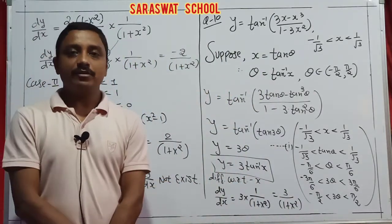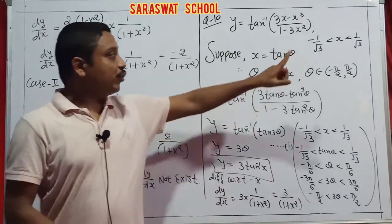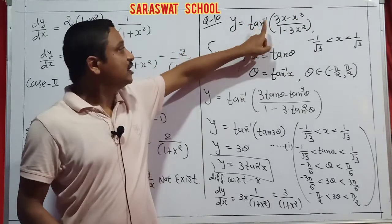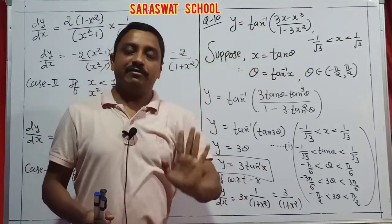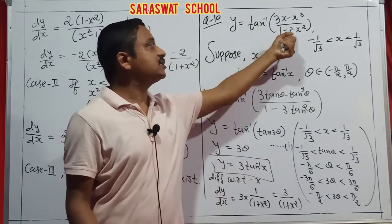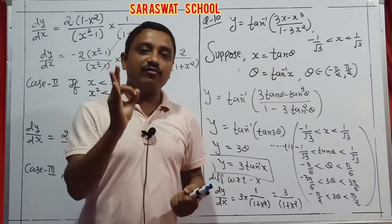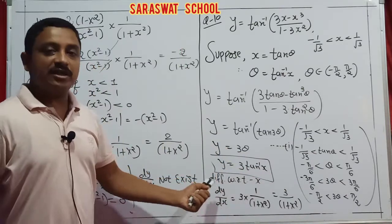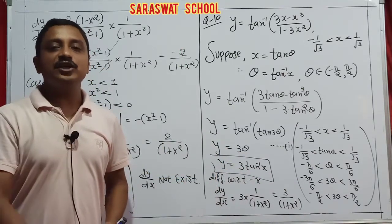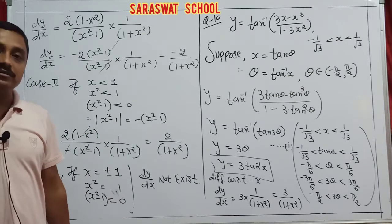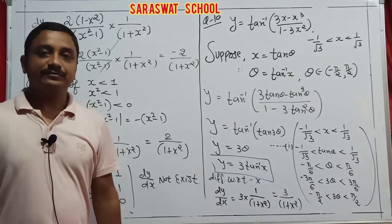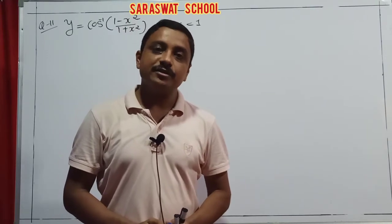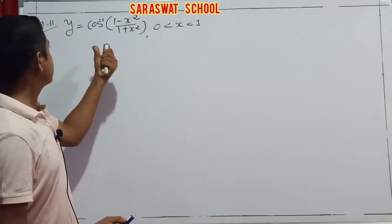But if the condition is not given, then you cannot go suggestion-wise; you go to the direct derivative with u/v rule for tan⁻¹. If a particular condition is given, then go condition-wise with substitution. It's very, very easy. Continue to the next question: y = cos⁻¹((1-x²)/(1+x²)) with condition 0 < x < 1.